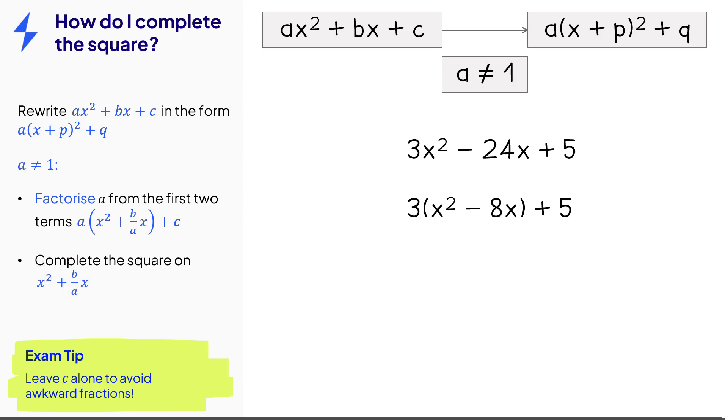Now we just complete the square on the expression inside the bracket so the x squared minus 8x. So half the 8 gives us 4. We still subtract 4 squared even though there's a subtraction inside the bracket. We always take away that number squared so we get minus 16. Then we multiply the whole thing by n and then add the c. So multiply everything by 3 and then add the 5. Simplify the expression by multiplying out the 3 and then combining the constant term at the end.